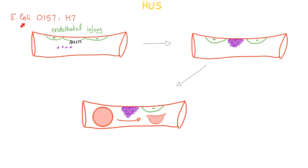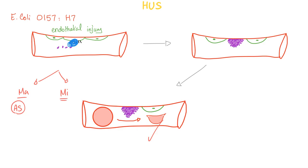What happened in HUS? The E. coli O157:H7 released its shiga-like toxin, which destroyed the endothelium of the blood vessel. Platelets then clump at the injured site, trying to seal the gap in the endothelium. But the red blood cell is big — it cannot pass through, so it gets absolutely sheared into a schistocyte, also known as a fragmented cell or helmet cell. Conditions where you see schistocytes include macroangiopathic hemolytic anemias (e.g., aortic stenosis) and microangiopathic hemolytic anemias: DIC, TTP, HUS.